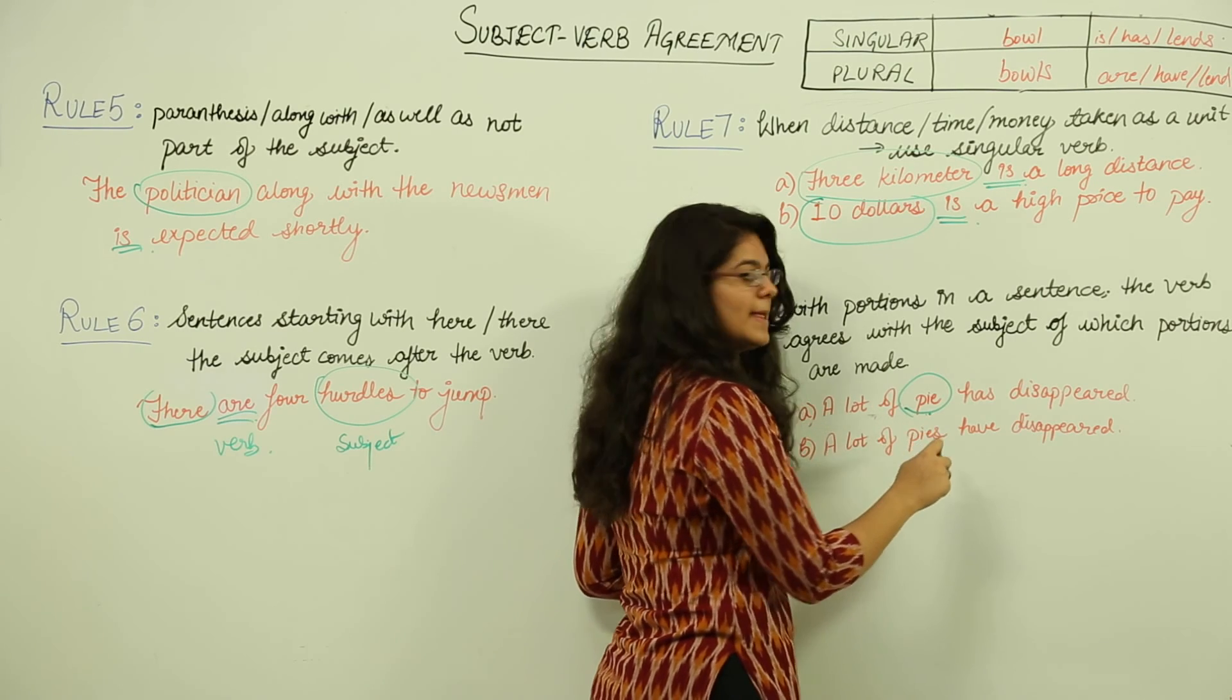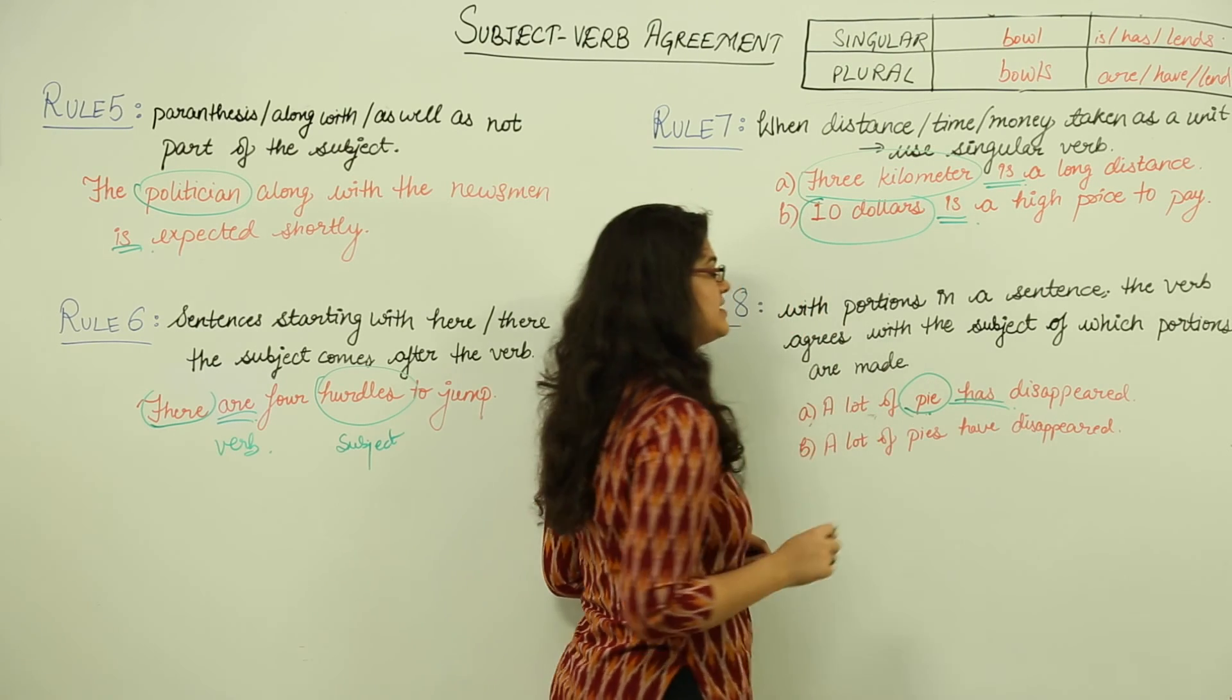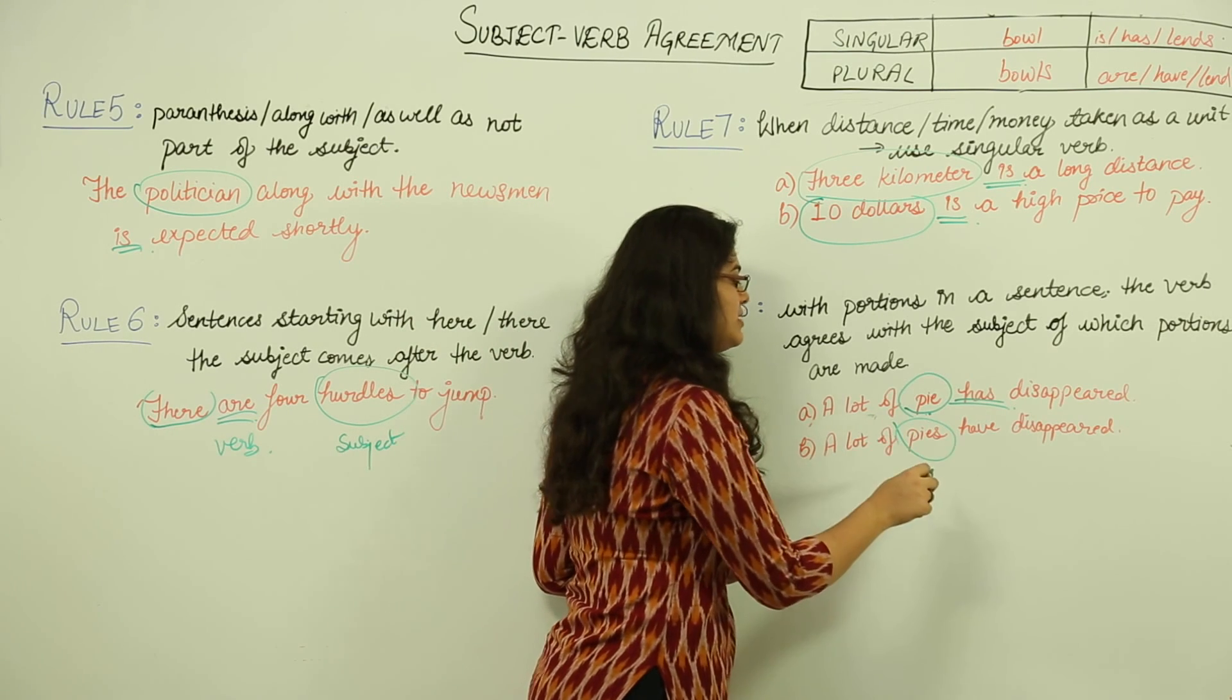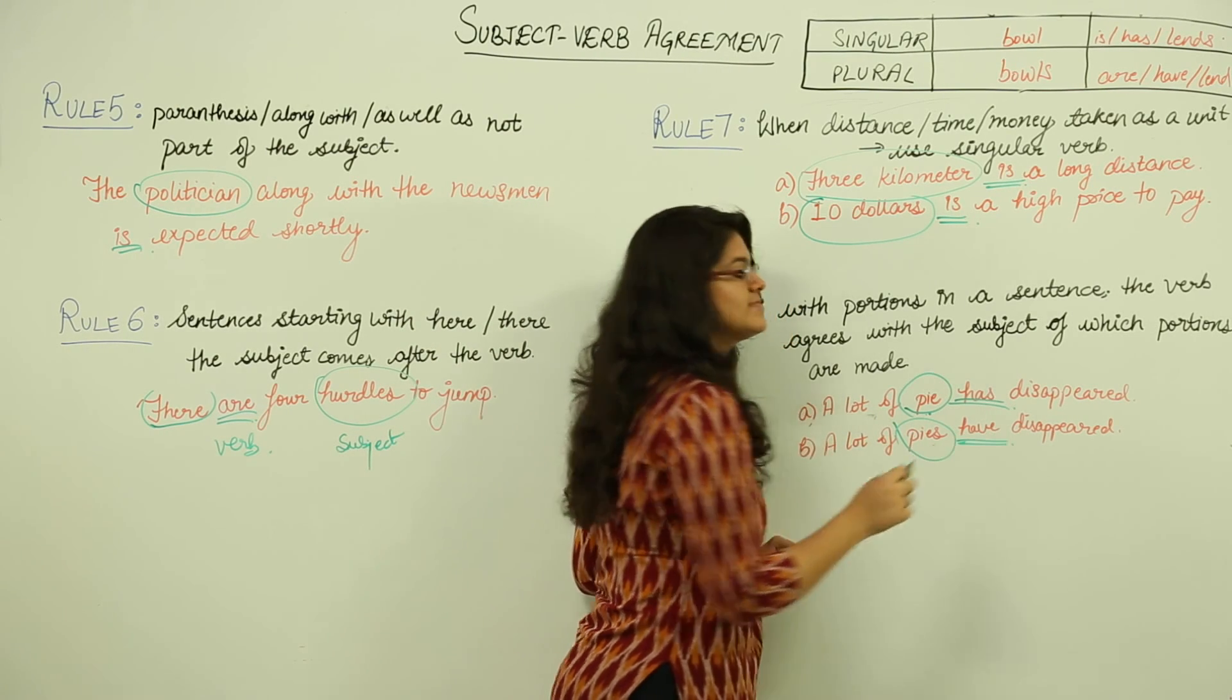And since it is singular, that's why a singular verb 'has' is being used. In the second sentence, pies is plural and 'have' as a plural verb has been used.